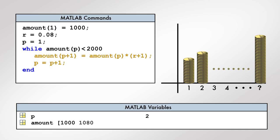As a result, a second element is added to the vector amount, and the variable P is incremented by 1.